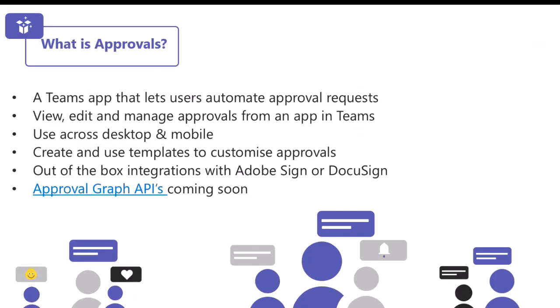So what are approvals? Approvals is an application in Microsoft Teams and it lets users automate approval requests. You can edit approvals, view them, and manage approvals all from that single place in Microsoft Teams. You can use it across desktop and mobile, so it's really great if you're on the go. You can also utilize existing templates that are available within the application, or create your own as well.